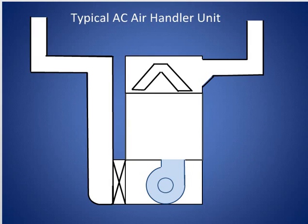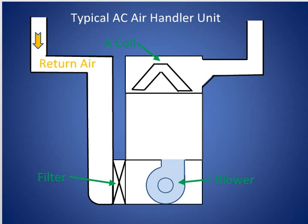To understand duct design we need to understand the basics of air flow. Return air is where the air goes into an air handler — this is a typical air handler unit. It goes through a filter, and there's a pressure drop across the filter. It goes into the blower, which puts pressure on the air, and then it blows up through the A-coil or the heat exchanger. Then it goes out into the supply air system, and if the duct work is designed correctly it doesn't interfere with the air handler producing the right amount of air through the heat exchanger, and everything works properly.